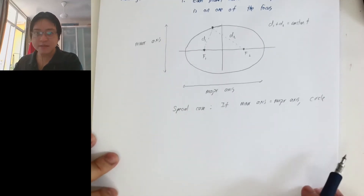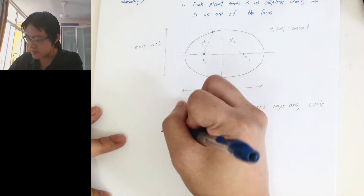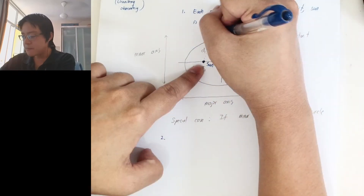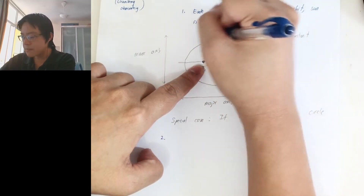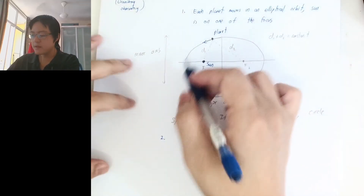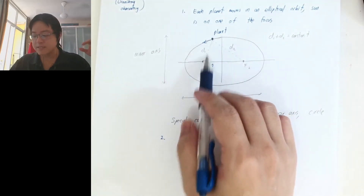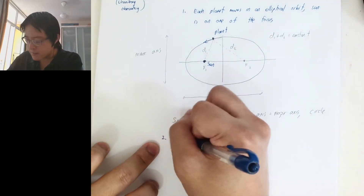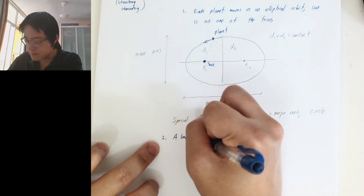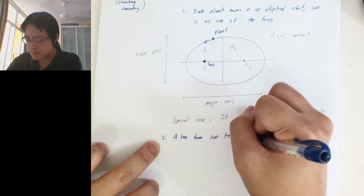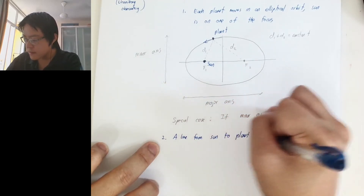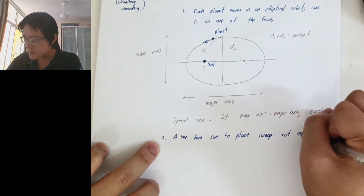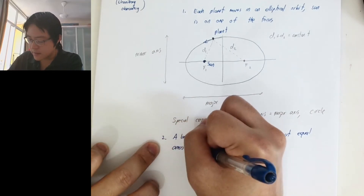The second law is about the time taken. A line from the sun to the planet sweeps out equal areas in equal times. So the sun is located at one of the foci, and the planet orbits around the sun — our Earth orbits the sun once a year, 365 days.